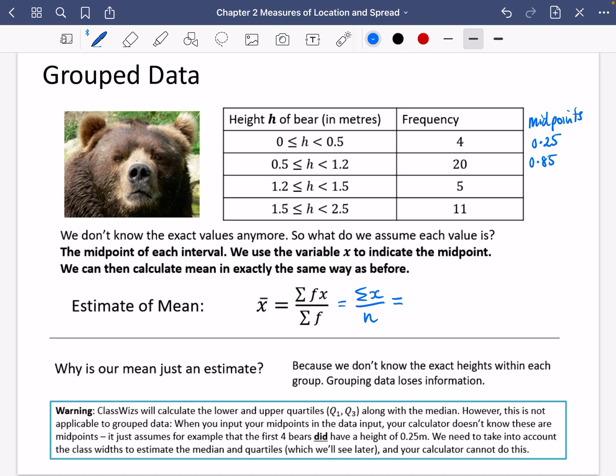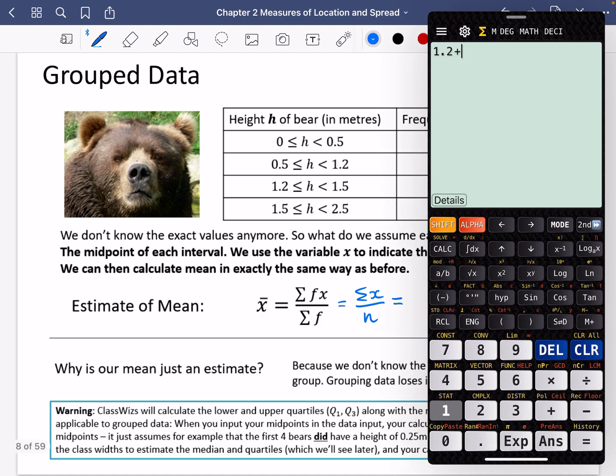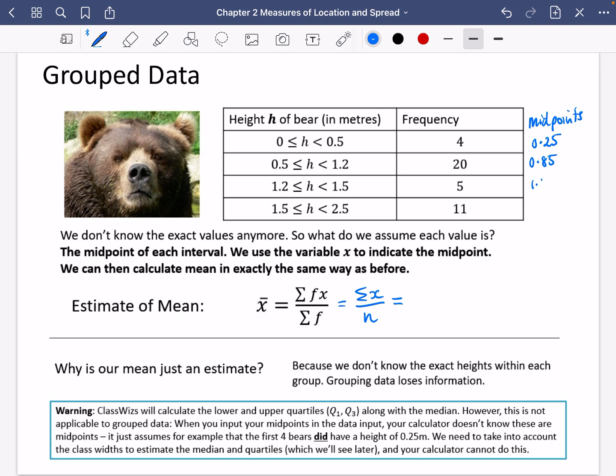Between 1.2 and 1.5, I'm going to add them together and divide it by 2. So it's 1.35. And then I've got 1.5 and 2.5. Well, that's going to be 2.